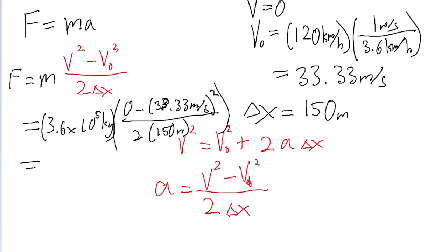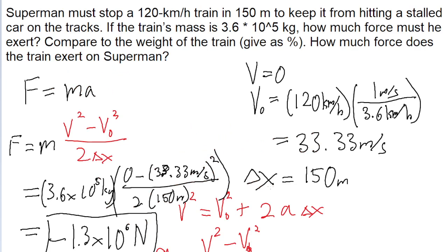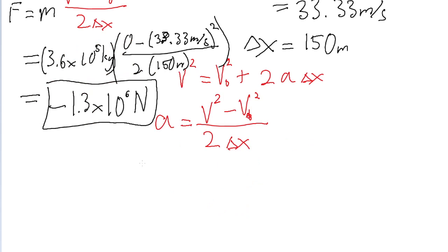If we put that into a calculator, then we find a force of negative 1.3 multiplied by 10 to the power of 6 newtons. So that is the force that Superman exerts on the train as he's slowing it down.